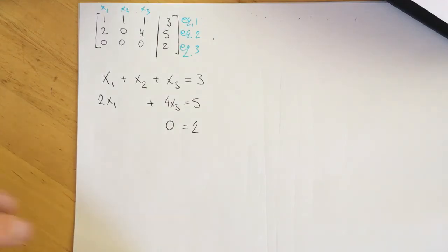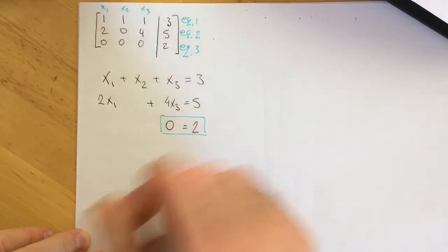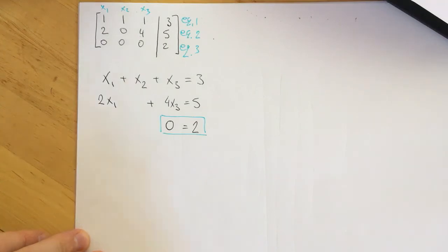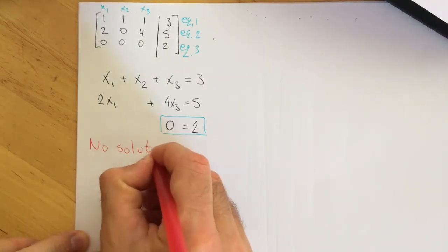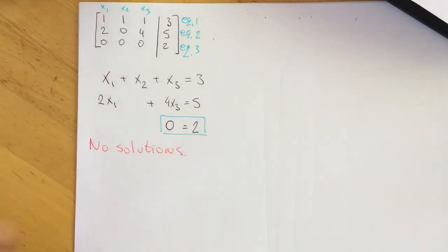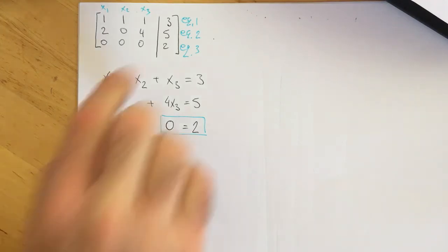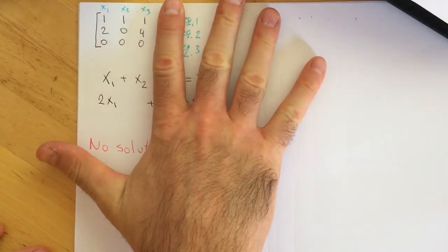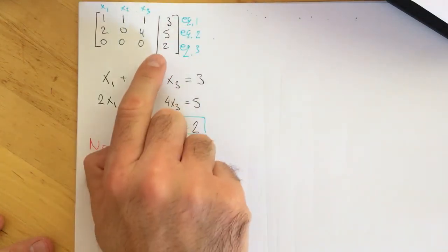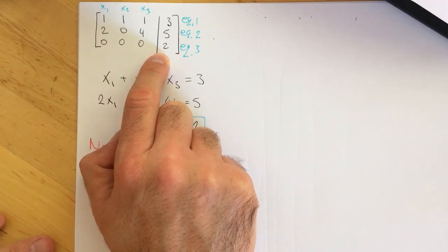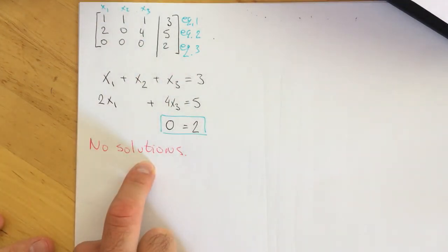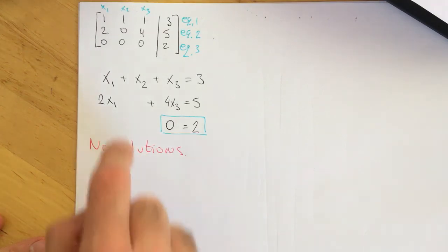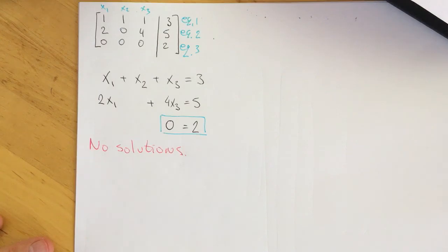What are the solutions? As we said in class, this system of linear equations has no solution, because of the contradiction 0 equals 2. So we have no solutions. This is very important: when the coefficient matrix has a row of all zeros but the corresponding value in the augmented column is different from zero, the system has no solutions. What this looks like geometrically, we'll cover in the next video.